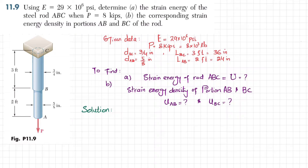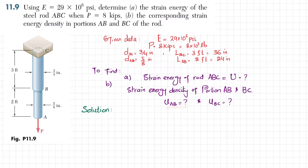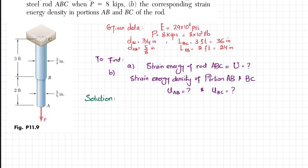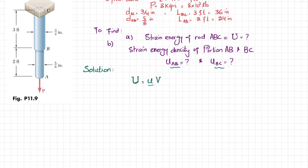In part A we are asked to find the total strain energy of the rod, capital U. In part B we are asked to find the strain energy density of portions AB and BC, which are u_AB and u_BC. We will start with the solution. We know that strain energy equals strain energy density times volume, but since we don't know the strain energy density of each portion, we will find u_AB and u_BC first.